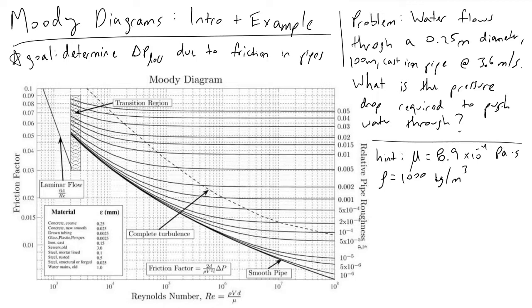If you're confident, you can pause the video now and see if you can do this example problem. If not, I'm going to walk through it anyway. So the first thing we're going to do is dissect our problem statement. We have water flowing through a 0.25 meter diameter, 100 meter in length cast iron pipe at a rate of 3.6 meters per second. Our goal is to figure out what is the pressure drop that we're realizing by pushing water through this length of pipe under these conditions.